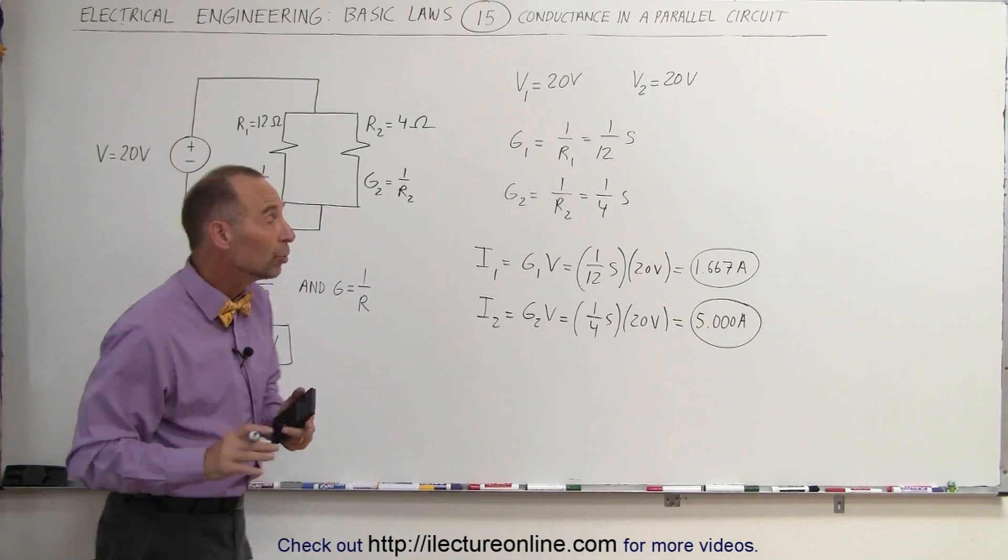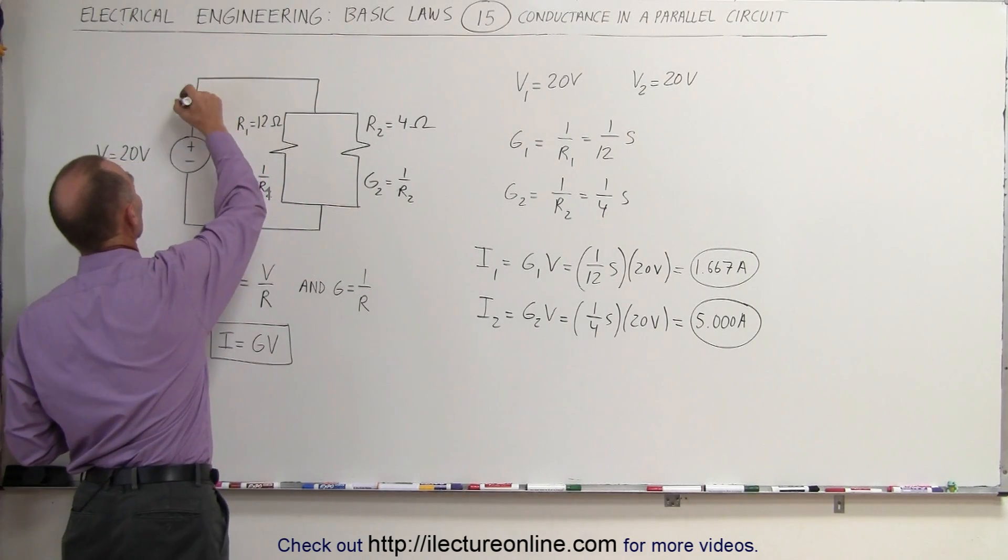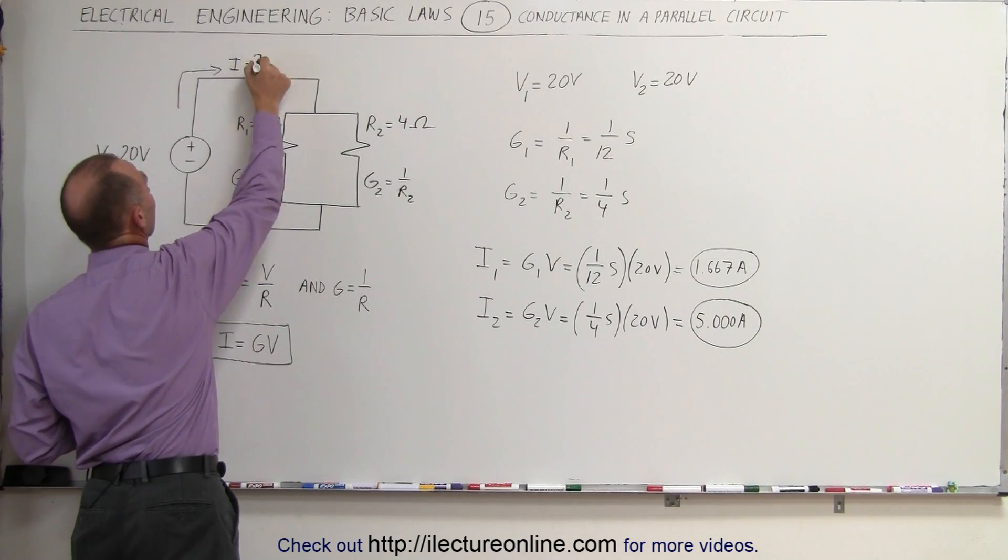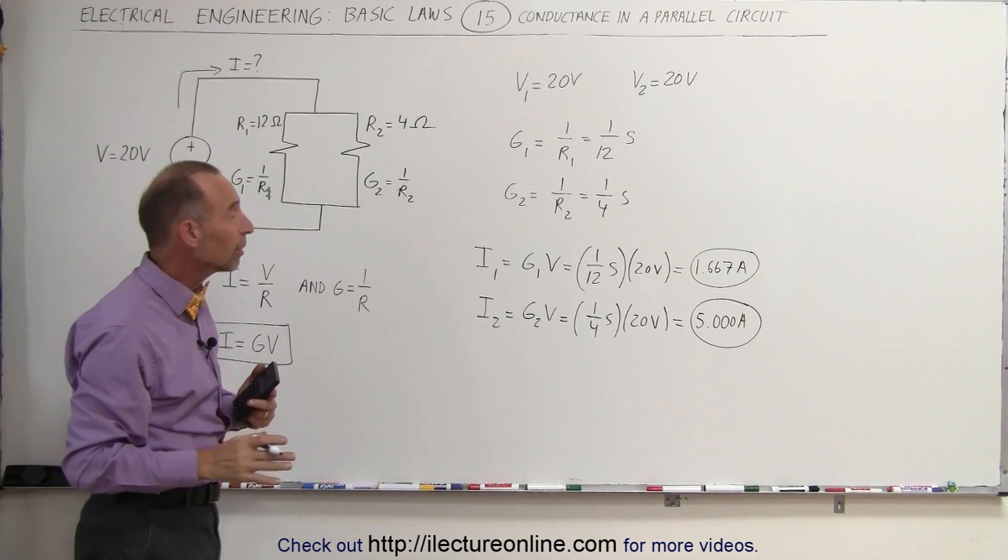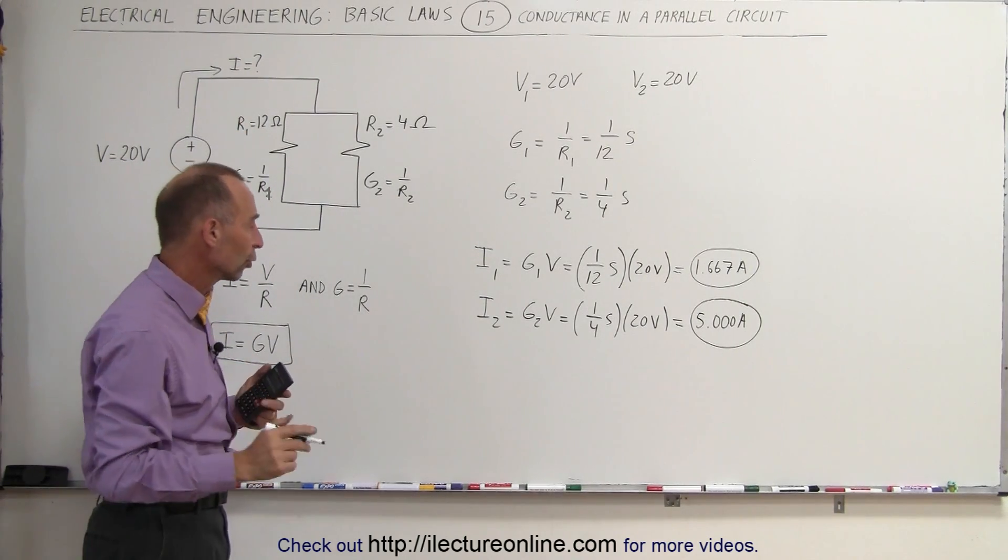And that should add up to the current of the circuit. So if we try to find I using the traditional method by using resistances, I'm going to find the total resistance.